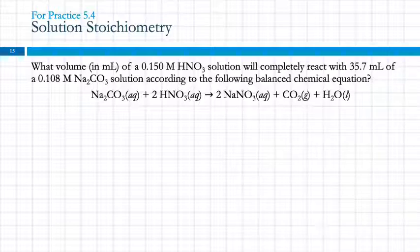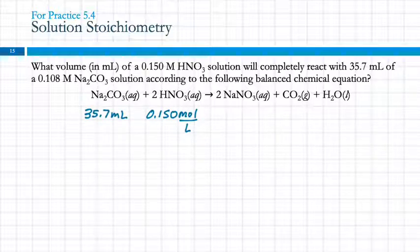Let's do this example. What volume in milliliters of a 0.150 M HNO₃ solution will completely react with 35.7 mL of a 0.108 M Na₂CO₃ solution, according to the following balanced chemical equation? I'm going to use the equation to organize my information. 0.150 is about the HNO₃, so 0.150, instead of writing capital M, I'm going to write moles per liter. And then it says 35.7 milliliters of sodium carbonate. I'll write that under that formula, 35.7 milliliters. And it also gives me a concentration for that one.